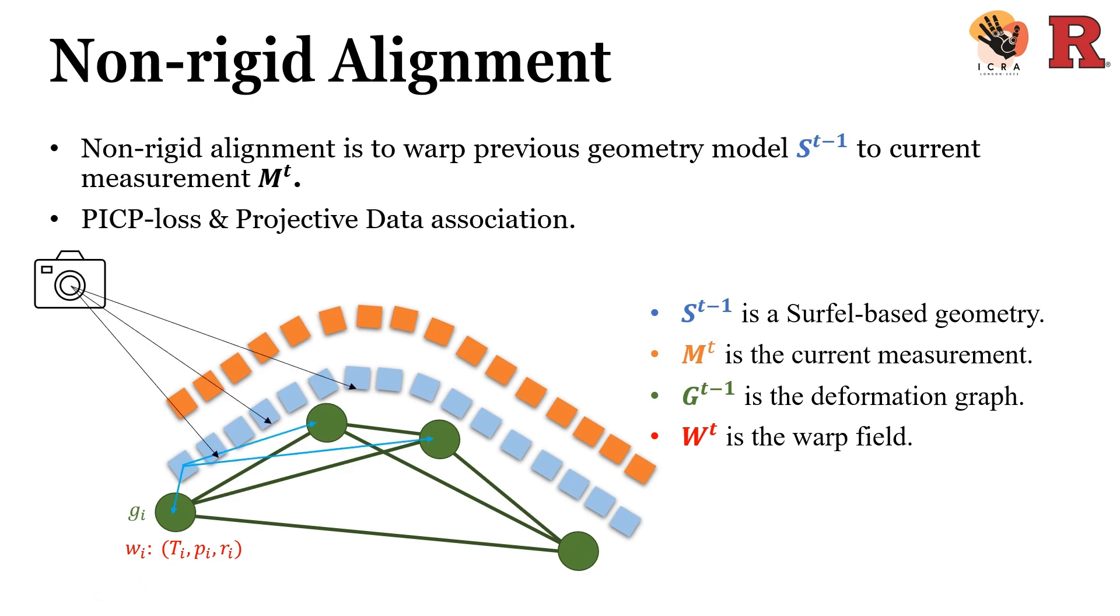Non-rigid alignment solves this W^t by solving a massive optimization problem. We have three optimization terms in Monostar. The first loss term is a common point-to-plane ICP loss. It uses a projective data association.